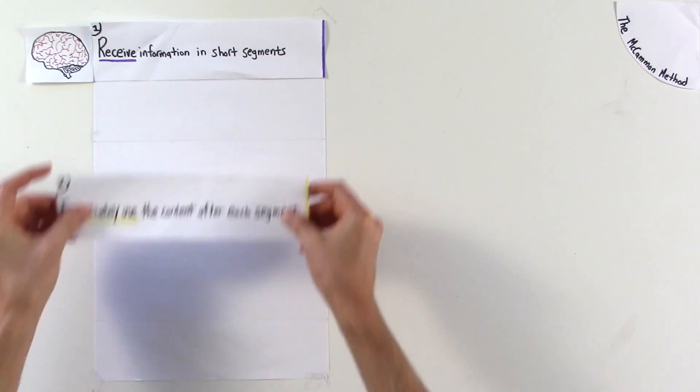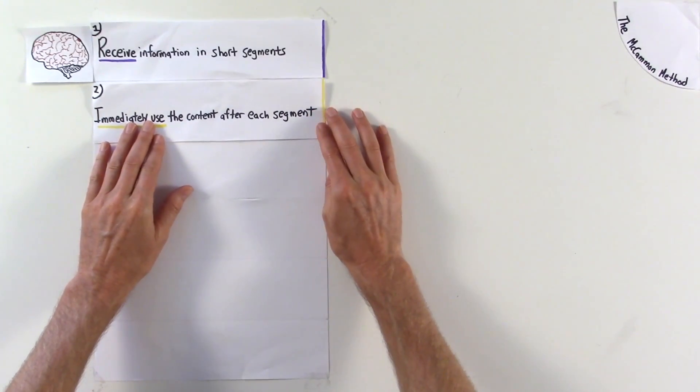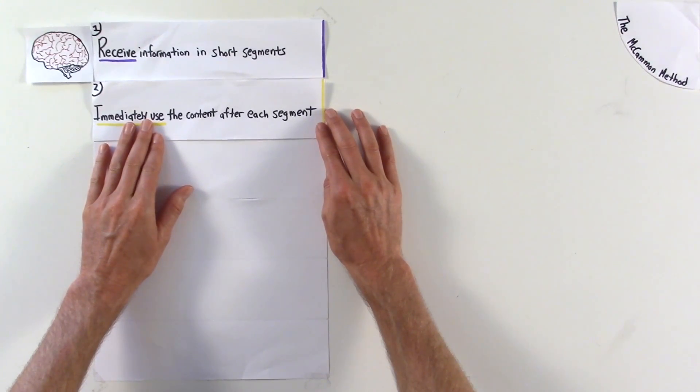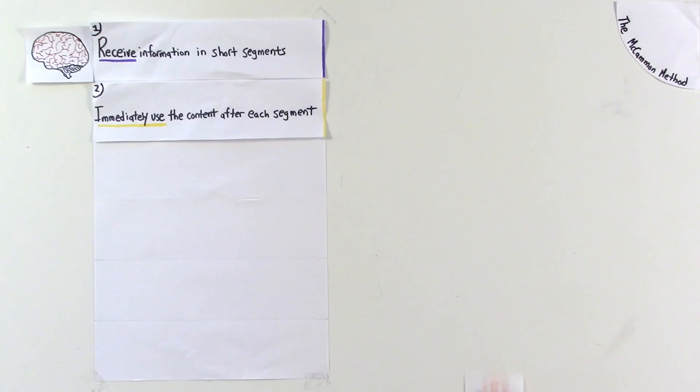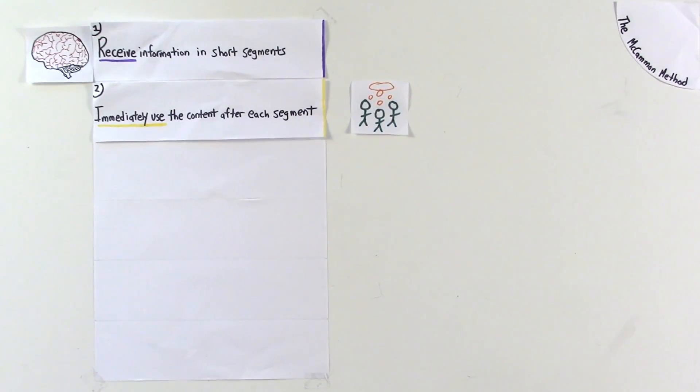Students should immediately use the content after each segment. After each chunk of content is delivered, we can challenge students to discuss the information, putting it in their own words. They should be encouraged to connect it to their life experiences, discuss these connections with peers, and ask clarifying questions.